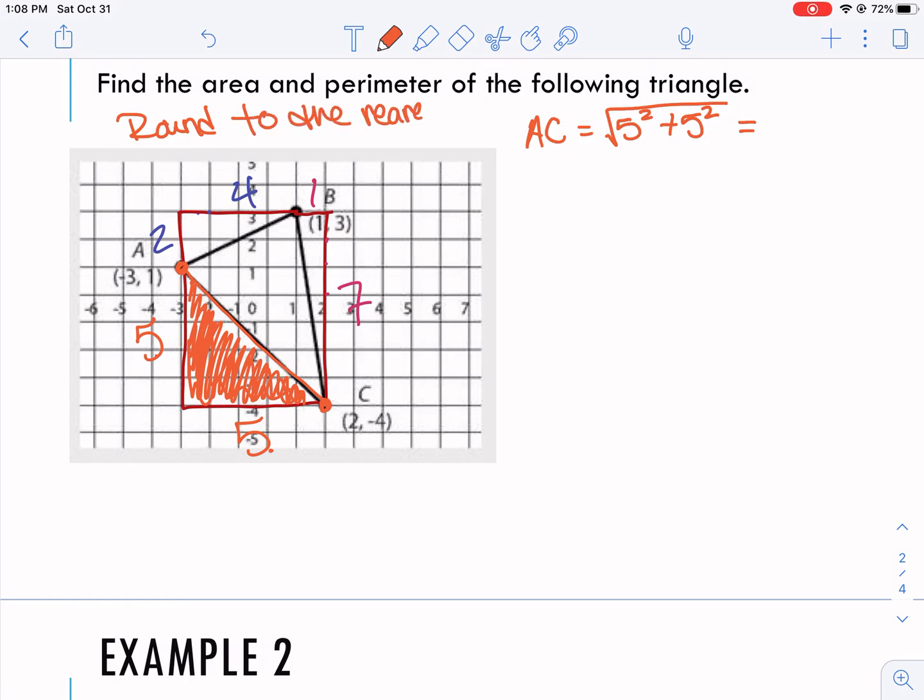So when you are doing these, use your calculator and round all answers to the nearest tenth. So the square root of 5 squared plus 5 squared is going to give me 7.1. So that is the length of AC, 7.1.